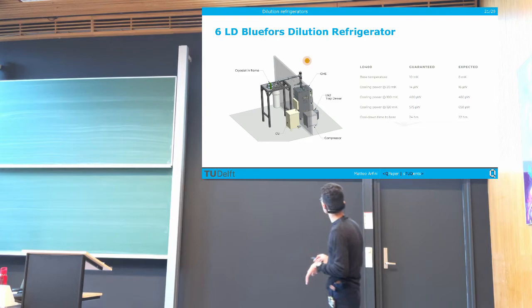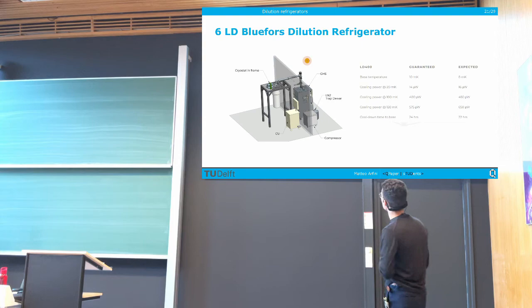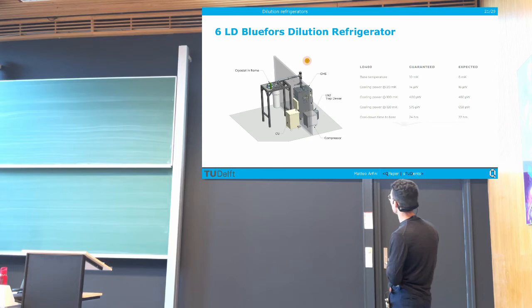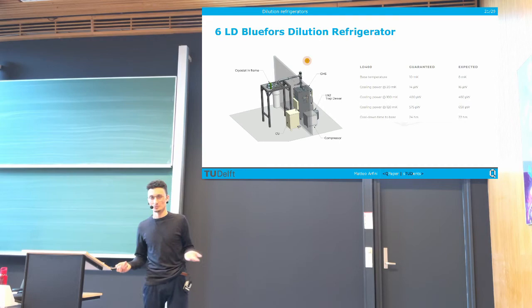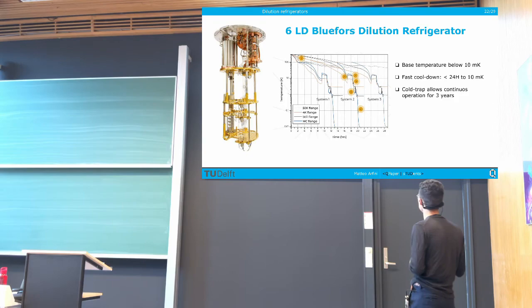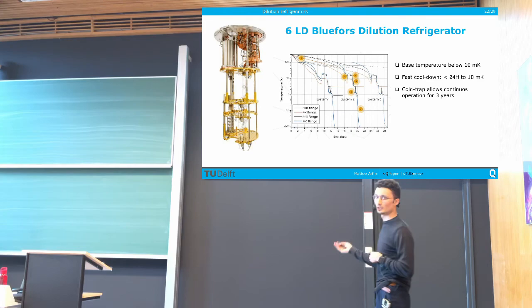Let me show you an example of a company that sells this kind of system: Bluefors, a Finnish company. The whole framework is a bit complex — we have the dilution refrigerator itself as the cryogenic system, a control unit, a gas handling system, and a liquid nitrogen trap, because we need to first reach 1 Kelvin before we can go further down. Their dilution refrigerator has a base temperature of 10 mK, which can be reached in 24 hours, and on their website they state that this system can work continuously for three years with no maintenance.